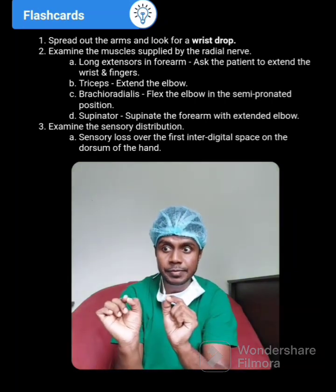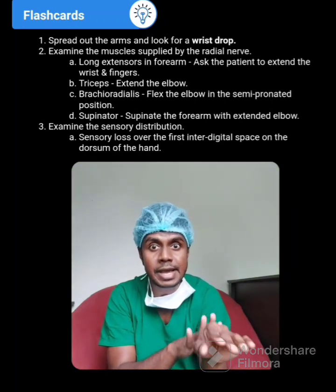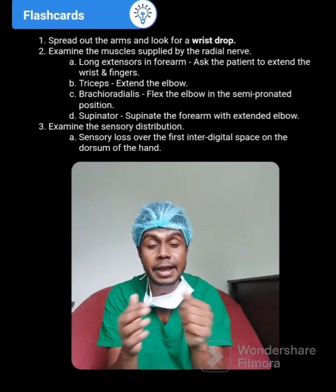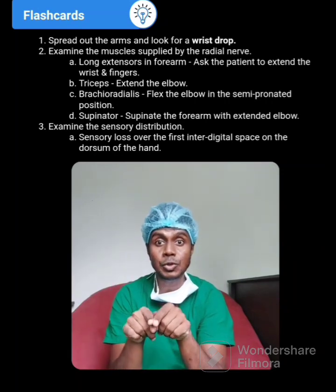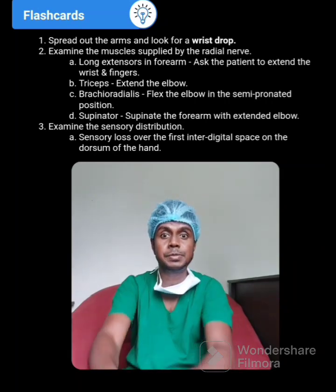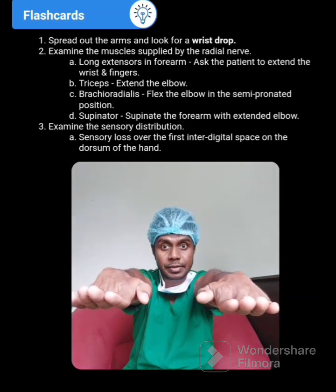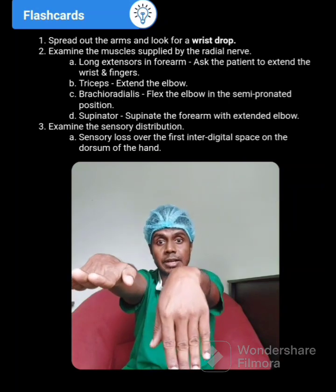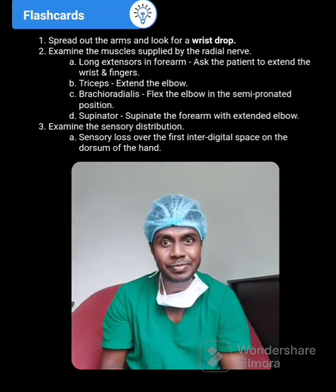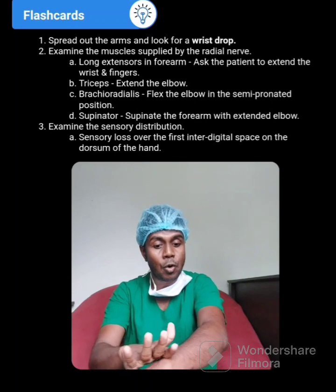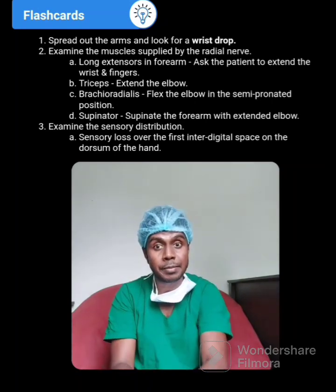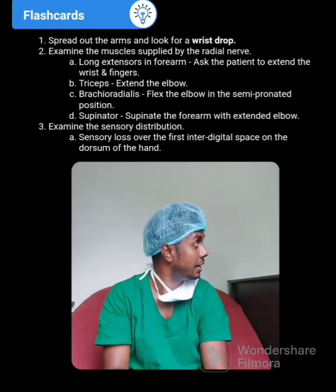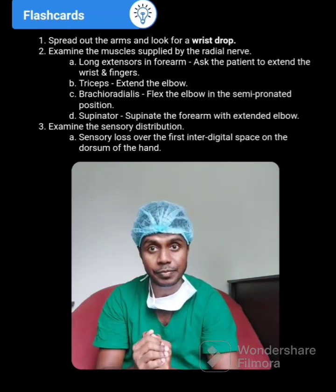What you have to do is check the skin and muscles supplied by radial nerve — whether those are intact or paralyzed. First of all, ask your patient to spread out the hand like this. If there is a radial nerve palsy, he can't extend from the wrist, because the long extensors of the forearm are supplied by the radial nerve. Once those are paralyzed, they can't extend the hand anymore.